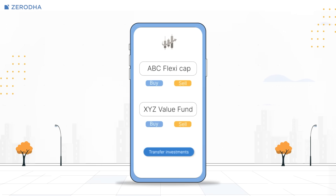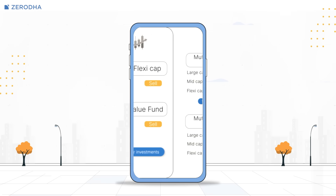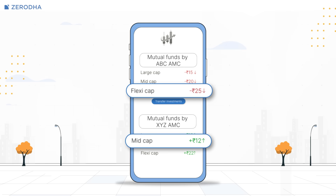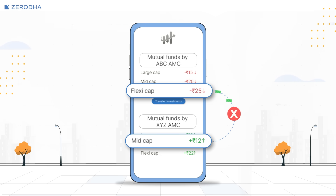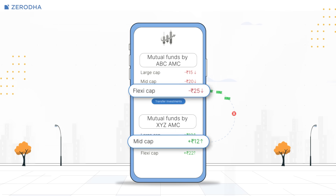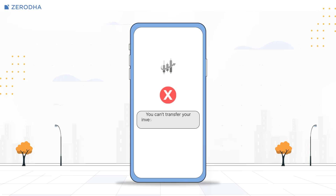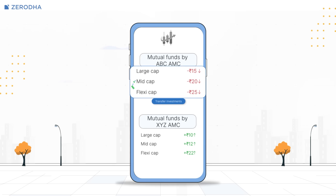Let me explain this with a simple example. Imagine you've invested in a flexi-cap fund from ABC AMC. Recently, you noticed that a mid-cap fund from XYZ AMC is performing well and you want to move your investments there. Now here's the problem. With regular STPs, you couldn't do this switch since ABC and XYZ are different AMCs. You could only move investments within the same AMC.